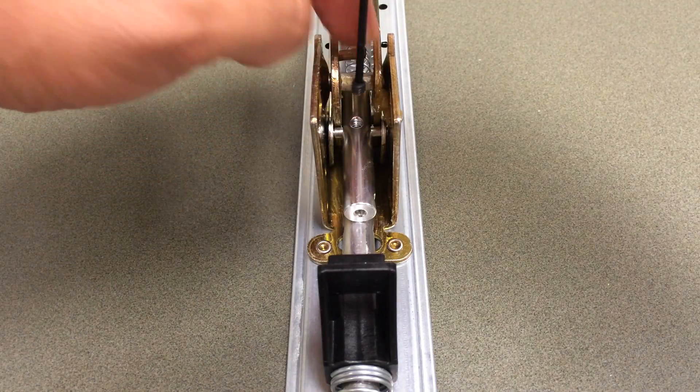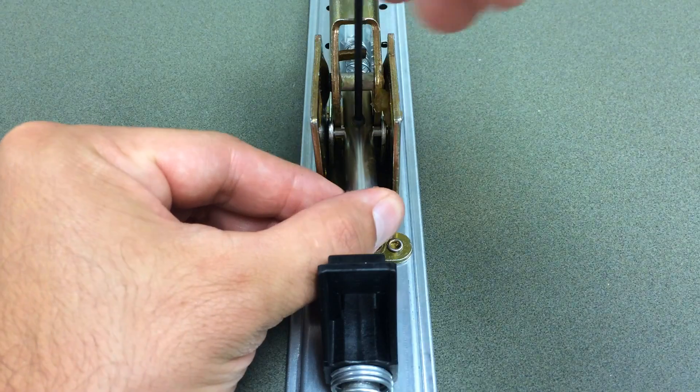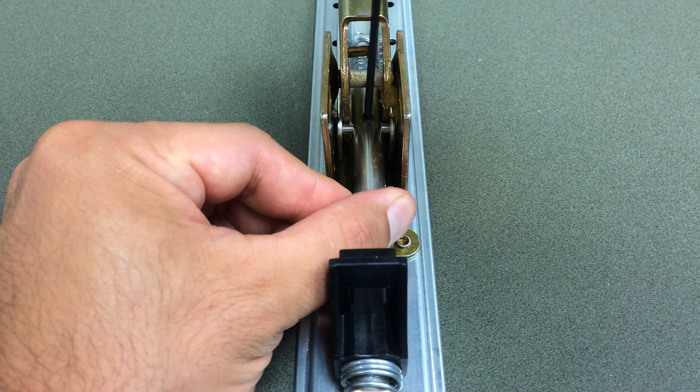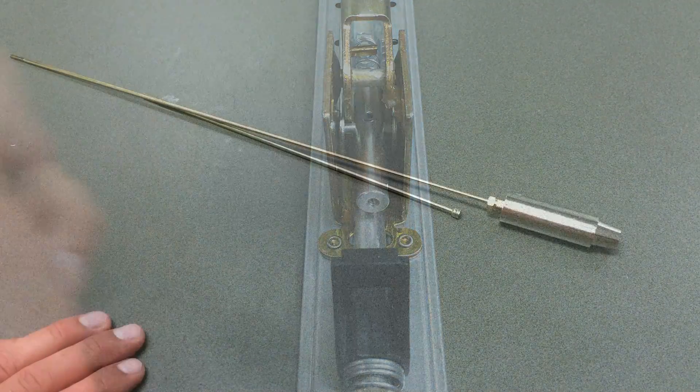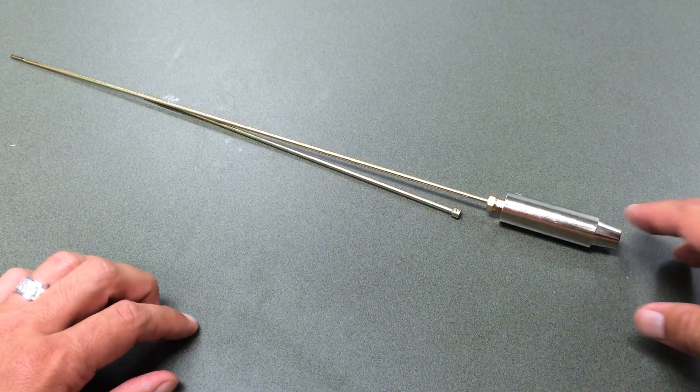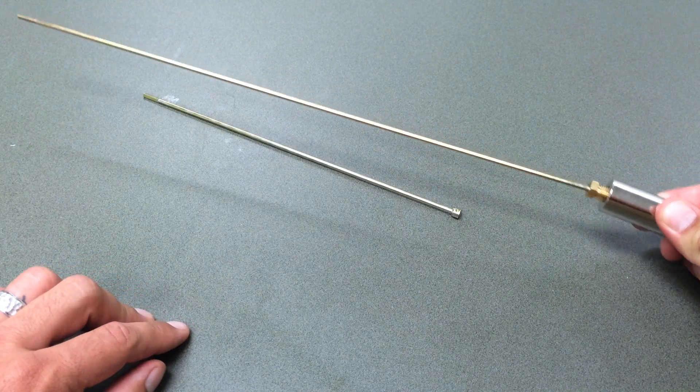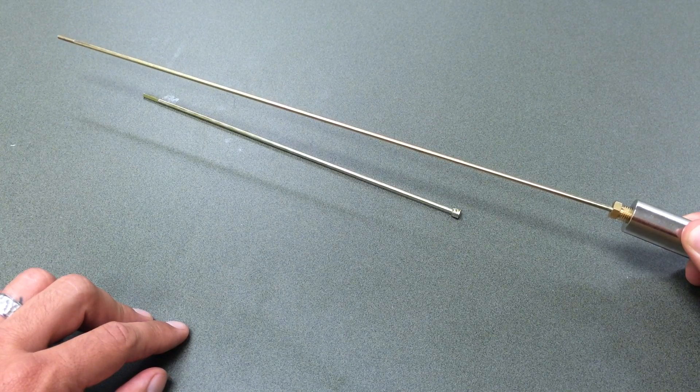Now I'm going to grab my hex wrench and hex screw provided and make sure that I secure that connecting rod end bracket on there. Once that's nice and secure, I'm going to grab my plunger and connecting rods. You're going to have two connecting rods, one for a 48 inch and one for a 36. I'm going to show you how to switch these out.